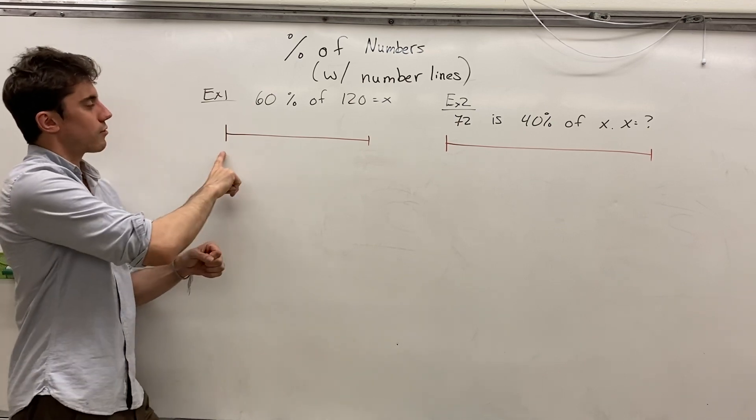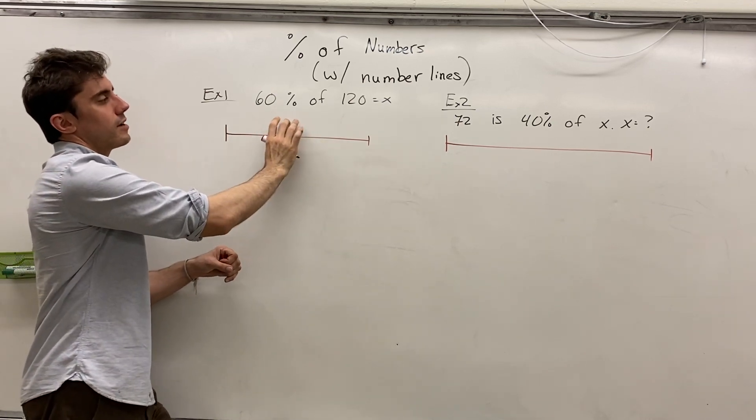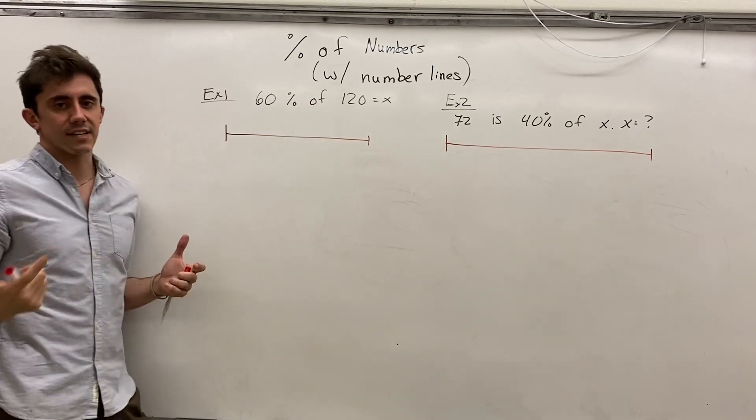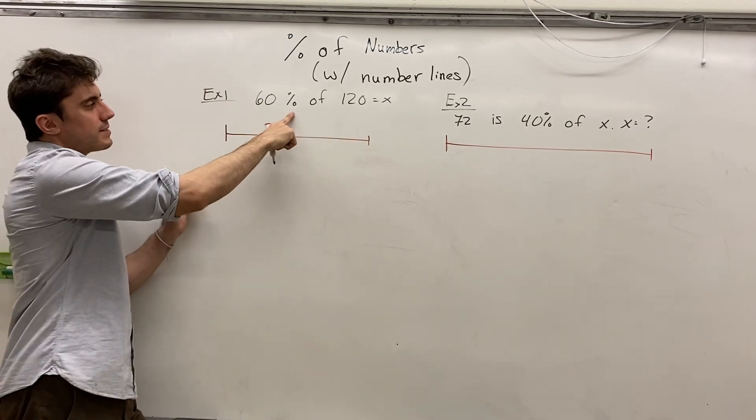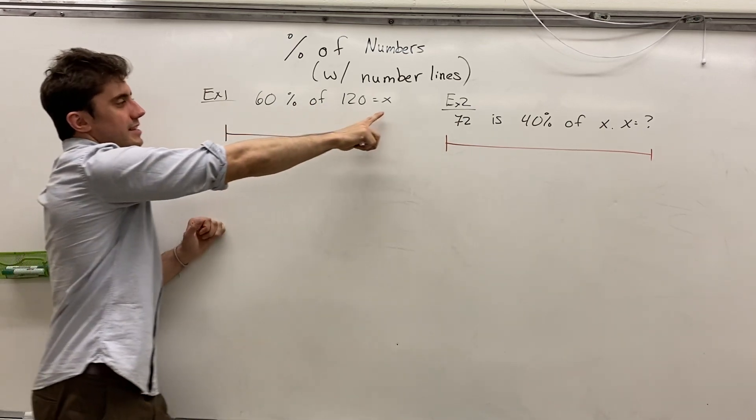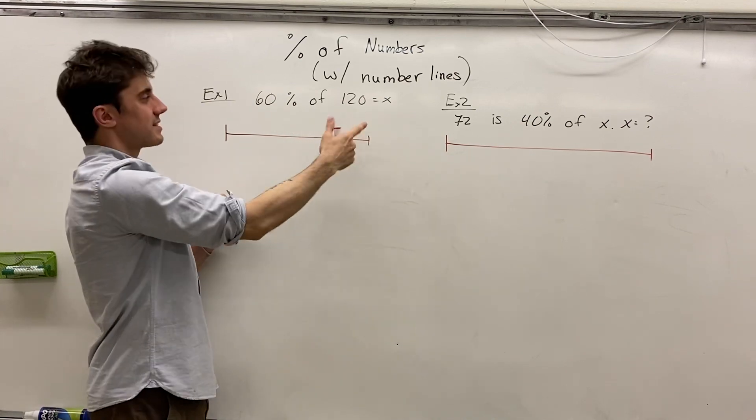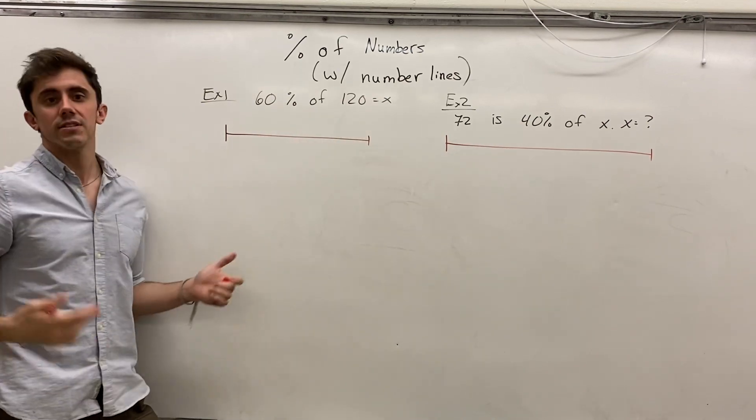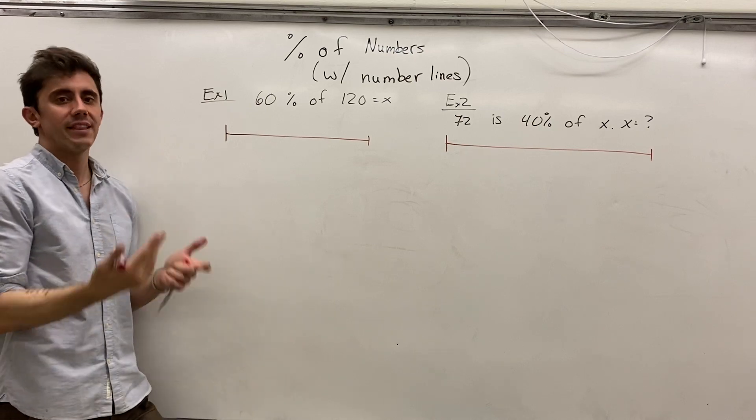What I propose is to draw out a number line. We're going to build a visual for what this is going to stand for. If we have 60% of 120 being equal to x, then x is going to be less than 120. Because it's less than 100% of 120, it has to be lesser in value than 120.